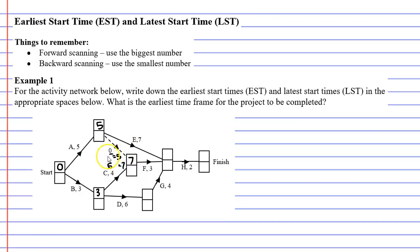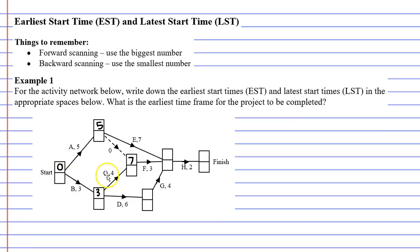Why do we use the biggest number? For activity F to start, activities A, B, and C must all be complete. If we started 5 hours into the project, activity A would be complete and activity B would also be complete, but we'd only be halfway through activity C. So it's important to pick the bigger number to ensure that all required activities are complete before activity F can start.